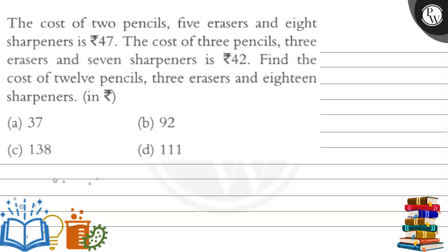Let's read this question. The cost of 2 pencils, 5 erasers and 8 sharpeners is Rs. 47. The cost of 3 pencils, 3 erasers and 7 sharpeners is Rs. 42. Find the cost of 12 pencils, 3 erasers and 18 sharpeners. Shall we solve this step by step?